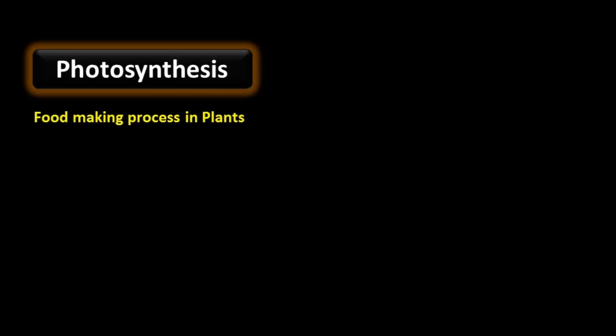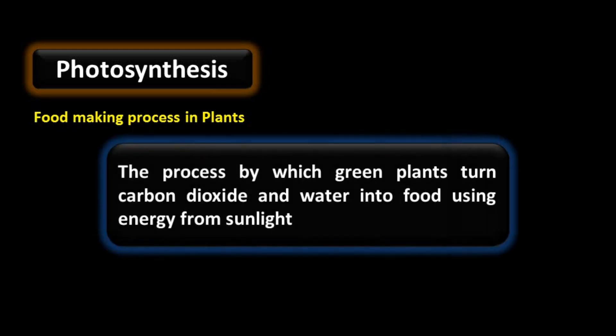Photosynthesis — the food making process in plants is known as photosynthesis. The process by which green plants turn carbon dioxide and water into food using energy from sunlight is known as photosynthesis.